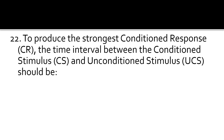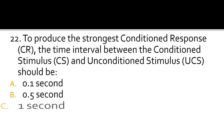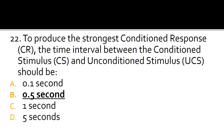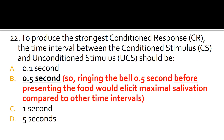Question 22. To produce the strongest conditioned response, the time interval between the conditioned stimulus and the unconditioned stimulus should be 0.1 second, 0.5 second, 1 second, or 5 seconds? The correct answer is 0.5 seconds. Ringing the bell half a second before presenting the food would elicit the maximal response — salivation — compared to other time intervals.